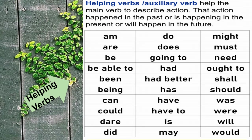Helping verbs are also known as auxiliary verbs. They help the main verb to describe action — whether that action happened in the past, is happening in the present, or will happen in the future. Let's look at some helping or auxiliary verbs.